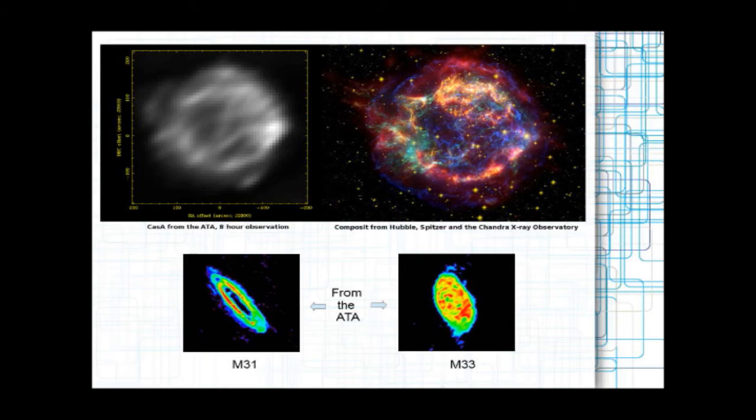that's from a composite from Hubble, Spitzer, and the Chandra X-ray Observatory. Okay, so we're much less expensive, much, much smaller, and we got a pretty good picture of Cassiopeia. And down below you can see some other pictures we've looked at. We're able to gather with the Allen Telescope Array M31 and M33, and I believe these were done around 1420 megahertz, so you're seeing the brightness of the hydrogen from those galaxies. So it's a unique instrument in that we can do the interferometry and the narrow band signal search at the same time.